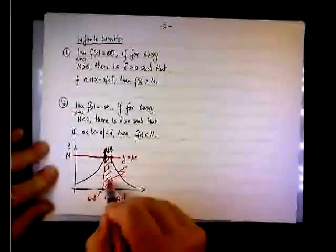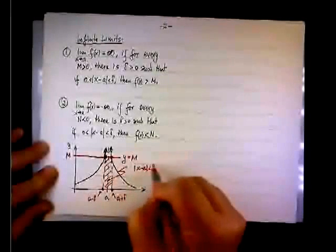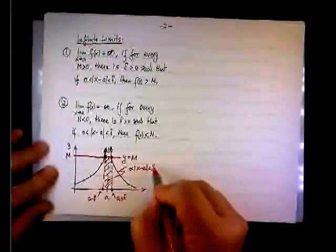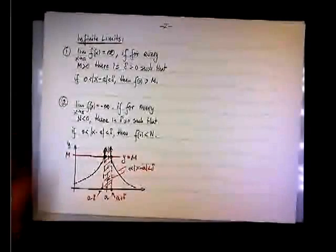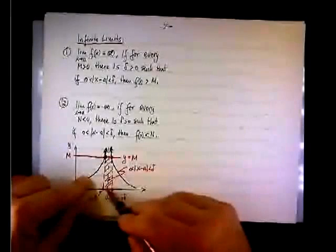So the x minus a is less than delta is this sleeve right there. Every point right there will be x minus a less than delta but greater than 0. It will be sitting inside this sleeve. So if we pick up a value of delta that is right there, then we guarantee that f of x will be greater than m. And we can make m as high as we want.